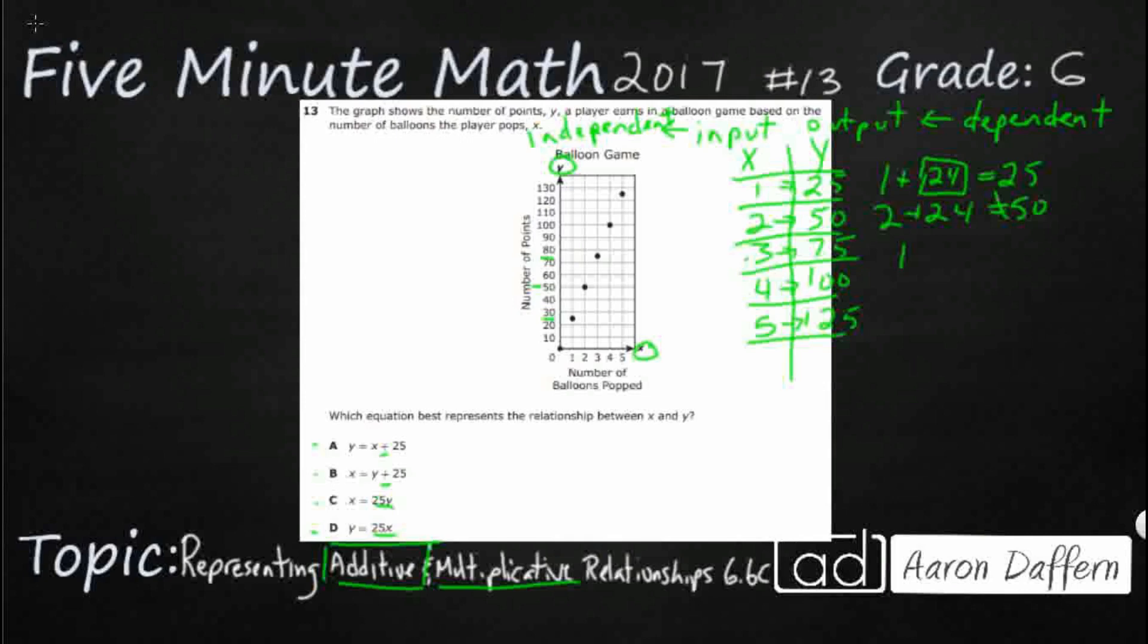So if you did 1 times 25, that gets you your first one. Let's try our second one, 2 times 25, that gets you 50, yeah that works. 3 times 25, and this is pretty simple because this makes us think of quarters if we're adding money. So 4 times 25 makes 100, and then 5 times 25, that makes 125. So we're good there.